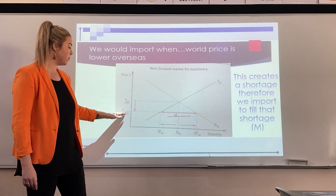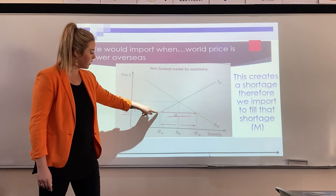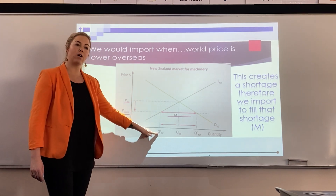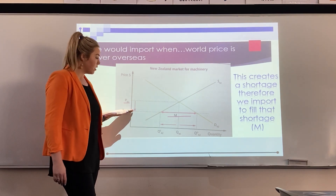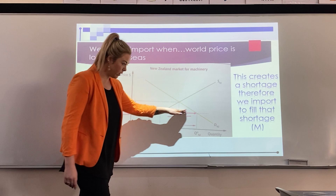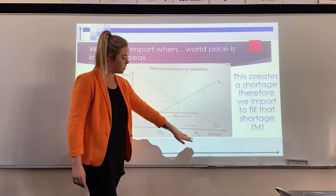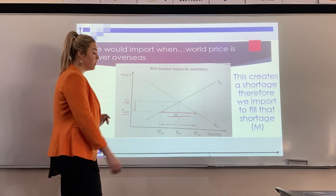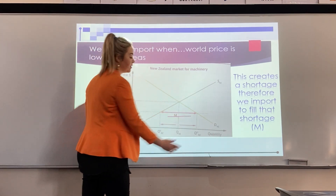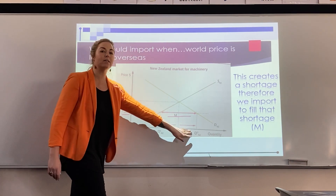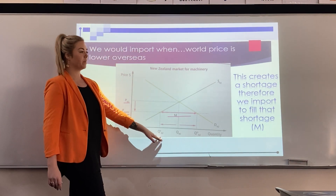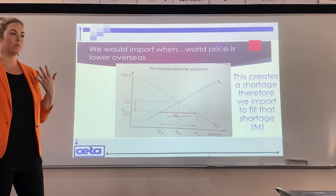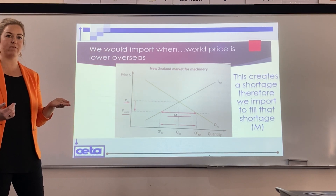When the price is lower than the domestic price in New Zealand, we draw our dotted lines across where it hits the supply curve, go down — that is our quantity supplied. We can then see on this axis that demand is greater than supply, so think about that logically.